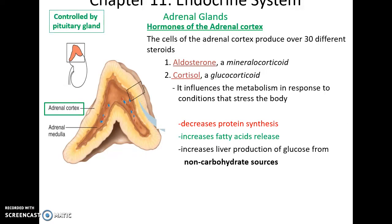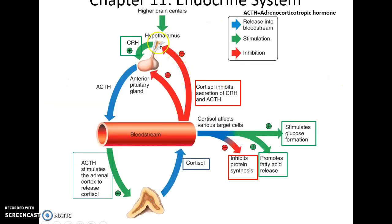Cortisol is a glucocorticoid that affects the metabolism of various compounds when we're stressed. It decreases protein synthesis, increases fatty acid release, and increases liver production of glucose from non-carbohydrate sources such as amino acids and lipids. The corticotropin-releasing hormone causes the anterior pituitary to release adrenocorticotropic hormone, which affects the adrenal cortex to release cortisol. The increased levels of cortisol in the bloodstream will also negatively feed back to the anterior pituitary gland and hypothalamus, telling them to stop causing more to be produced.